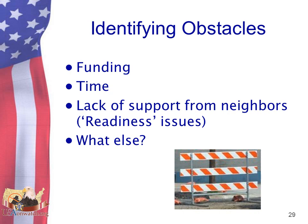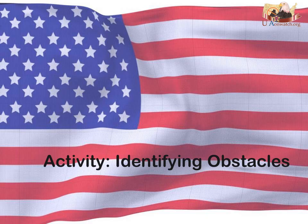Obstacles can often get in the way of your group's success. They can include a lack of funding, time, or support. Lack of support can sometimes be considered a readiness issue — there may be times when you need to prepare your neighborhood for a neighborhood watch program. For instance, if your group wants to focus on a drug problem, you may need to determine if the neighborhood is aware the problem exists. If some neighbors are in denial, you'll need to educate them before beginning your prevention efforts in order to get their support. Using your action planning worksheet, identify potential obstacles and how you would address them.